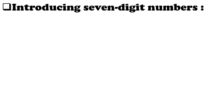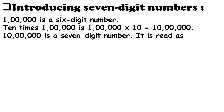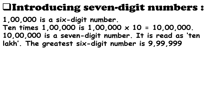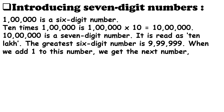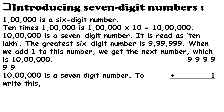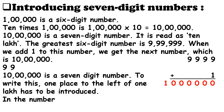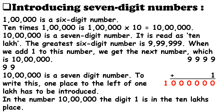Students, now we know about 6-digit numbers. Let us now learn about 7-digit numbers. 1,00,000 is a 6-digit number. 10 times 1,00,000 equals 10,00,000, which is a 7-digit number. The greatest 6-digit number is 9,99,999. When we add 1 to this number, we get 10,00,000, which is a 7-digit number.